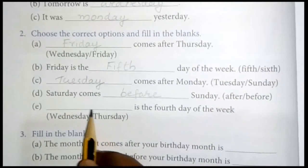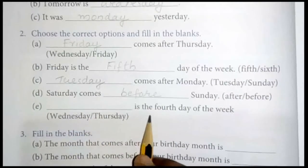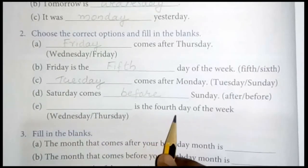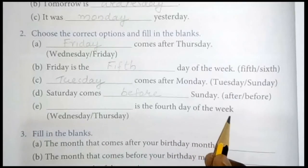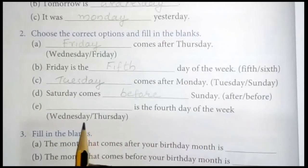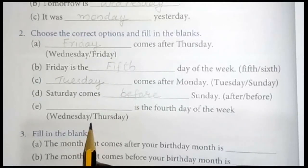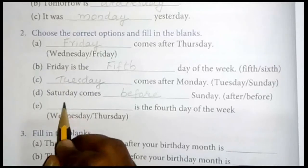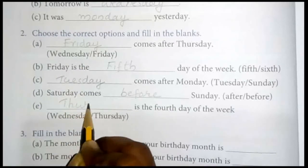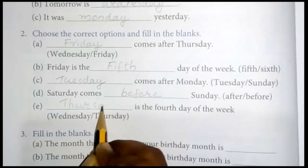Next: dash is the fourth day of the week. Count: Monday, Tuesday, Wednesday, Thursday. Thursday is the fourth day. So write here: Thursday.